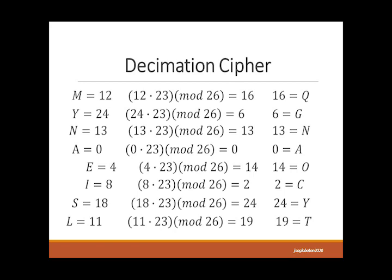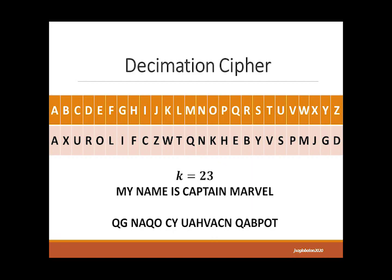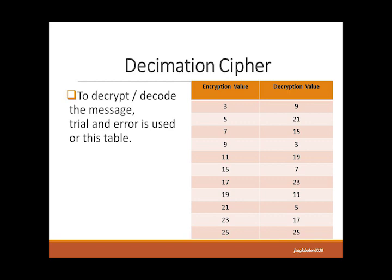In the end, you have the full encryption table with k = 23 as shown on your screen. And 'My name is Captain Marvel' is now encrypted as a different ciphertext. For each cryptosystem, you have a different encrypted message. To decrypt the summation cipher, trial and error is used, or if the encryption value is known, its corresponding decryption value is used as the multiplier as shown in this table.